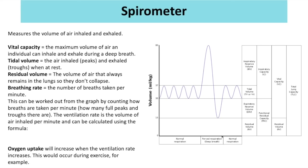You can measure the volume of air inhaled and exhaled using a spirometer, which produces a graph showing peaks and troughs. The beginning of the graph shows normal respiration, then there is forced respiration — a really deep inhale and exhale — and then it returns to normal. Labels on the graph indicate what each peak and trough represents.